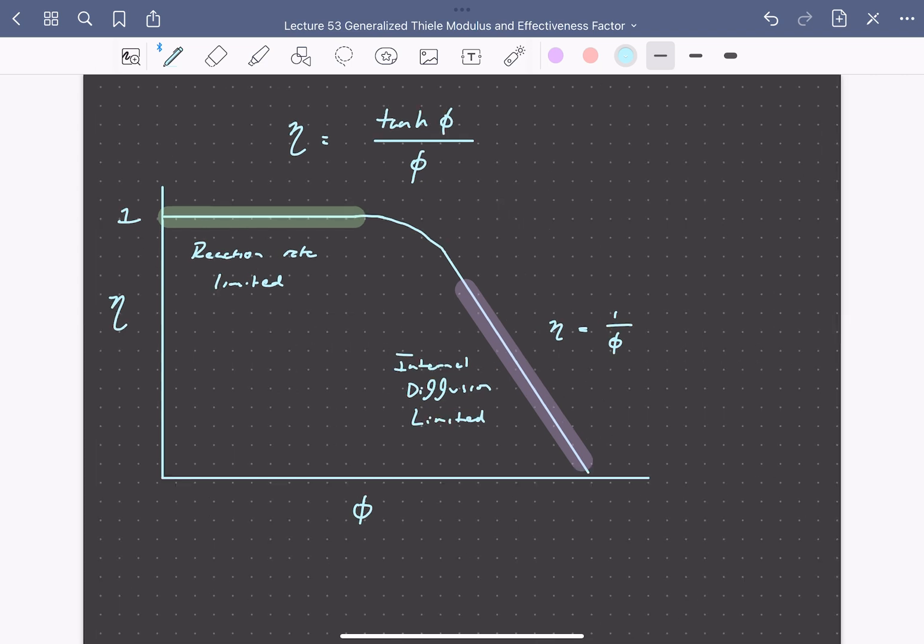So here we've discussed two non-dimensional parameters, the Thiele modulus and effectiveness factor, that can both give us useful information for understanding which processes are limiting our overall rates in systems where we have internal resistance to diffusion coupled with reaction.